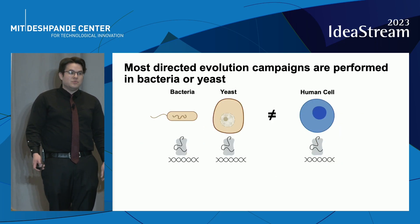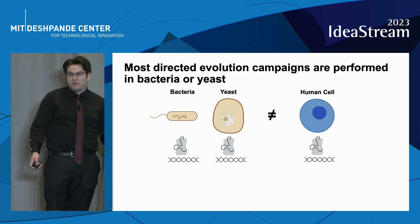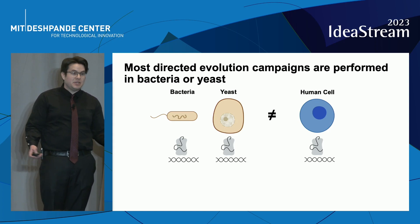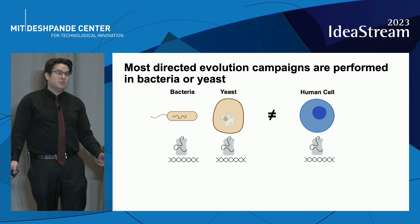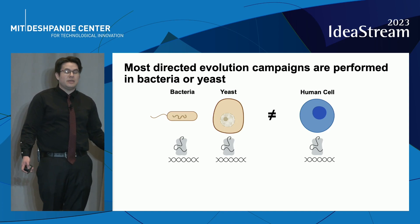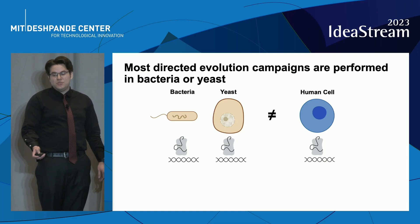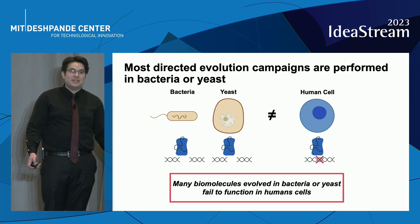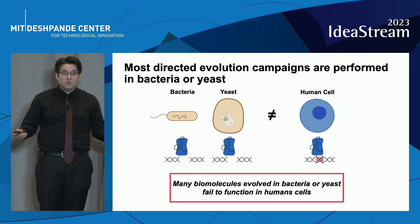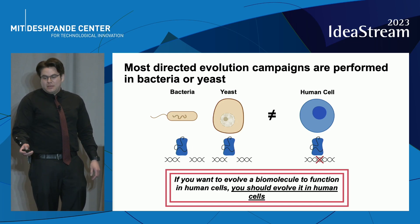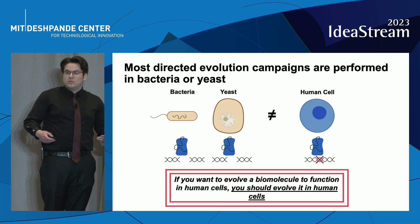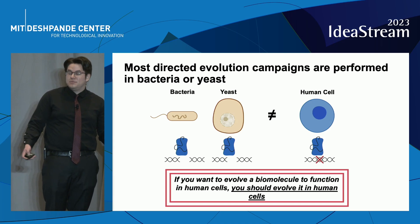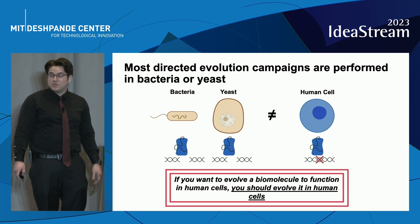The prevailing issue in this field, however, is how folks perform directed evolution. Most directed evolution campaigns are performed either in a test tube or in bacteria or yeast. Although these systems work very well to very quickly perform directed evolution and find useful biomolecules, because you're using the wrong environment, a lot of biomolecules end up failing to function inside of human cells, which is ultimately where you would want these biomedicines to work.